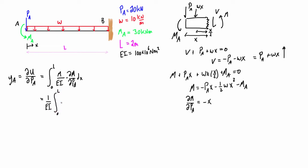So we have from 0 to L, the expression for m is negative Pax minus 1 half wx squared minus mA. And the expression for the partial derivative of m with respect to Pa is just negative x, and that's all with the dx at the end. Let's not forget that.